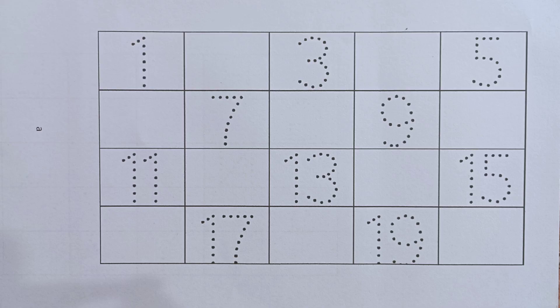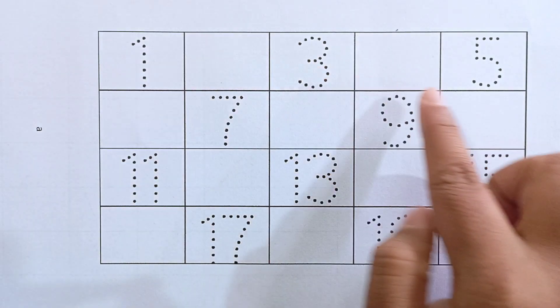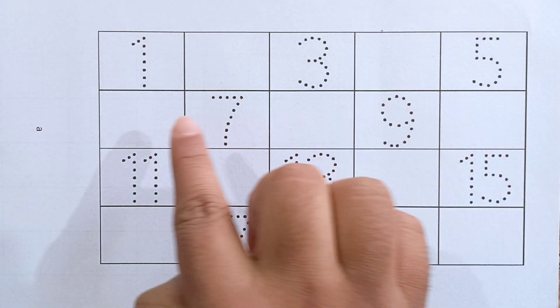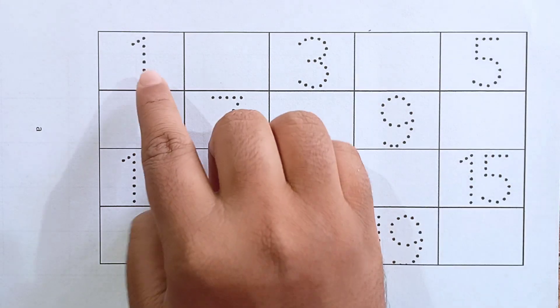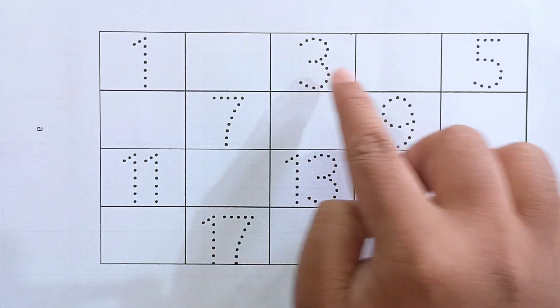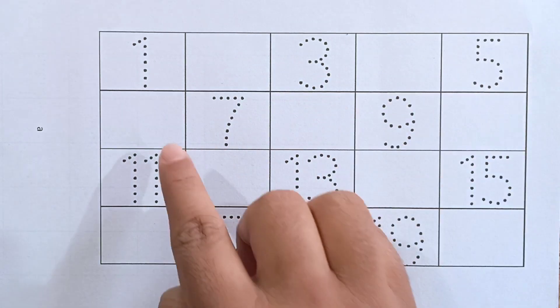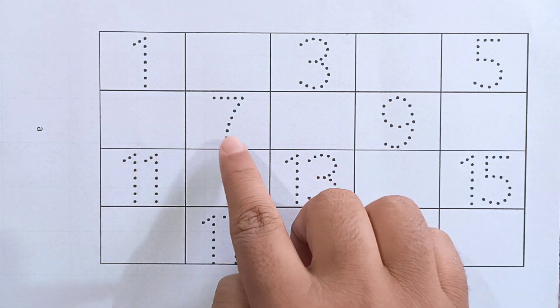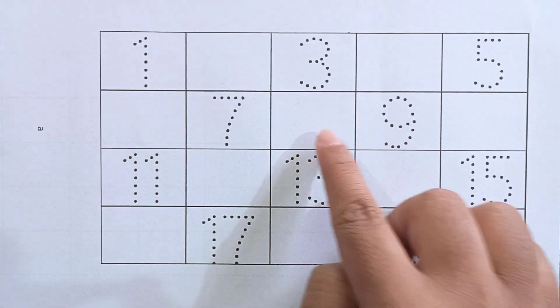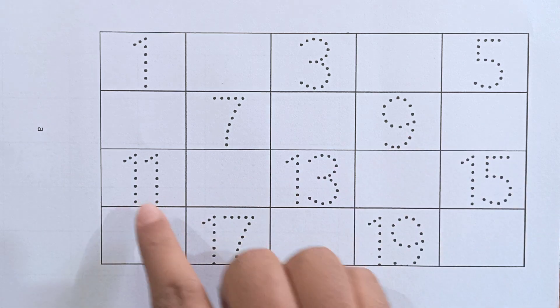Hello kids, let's fill up these numbers from 1 to 20. See, some numbers are missing in this table — we have to fill them up. Okay, from 1 to 20 there are some numbers missing, we have to fill them up.